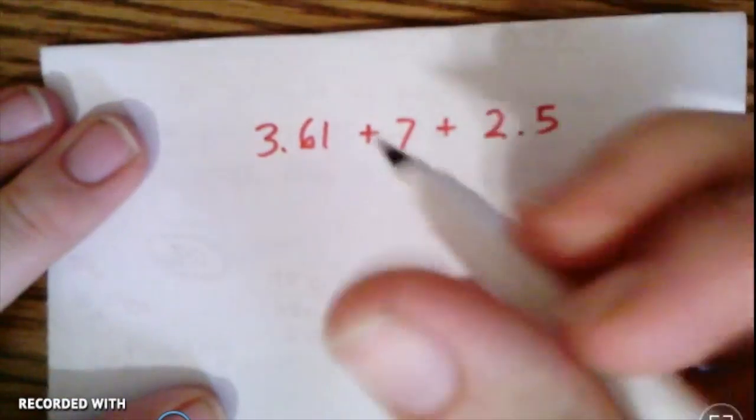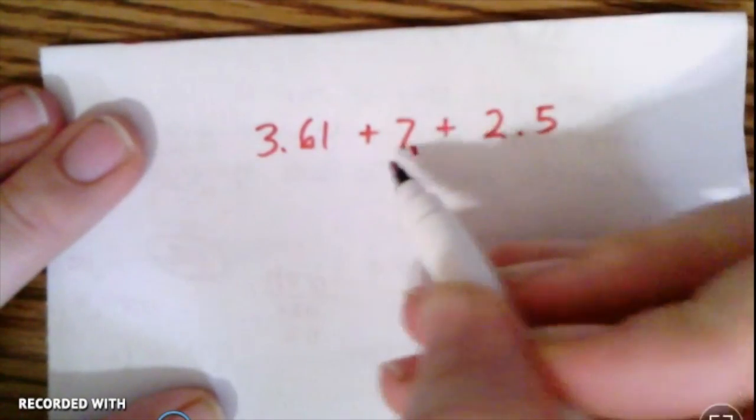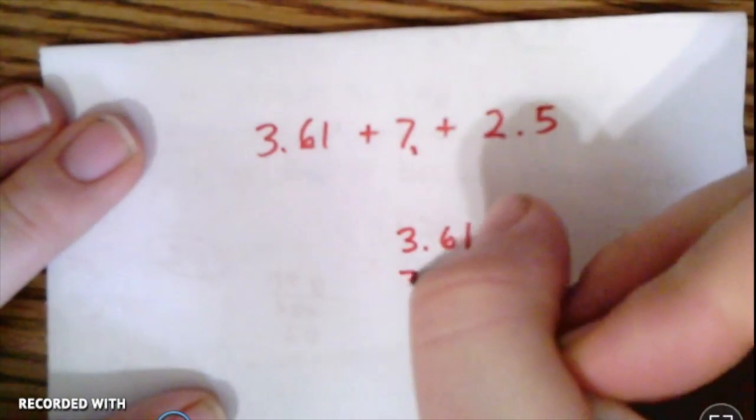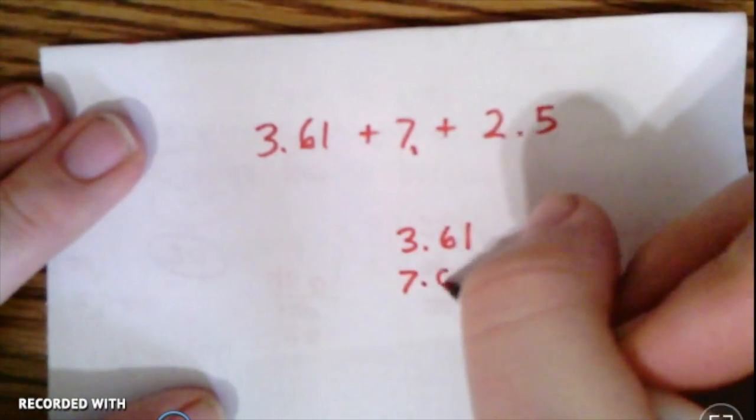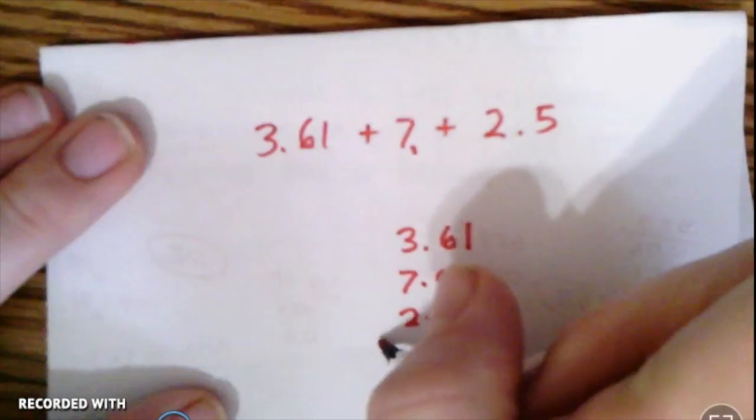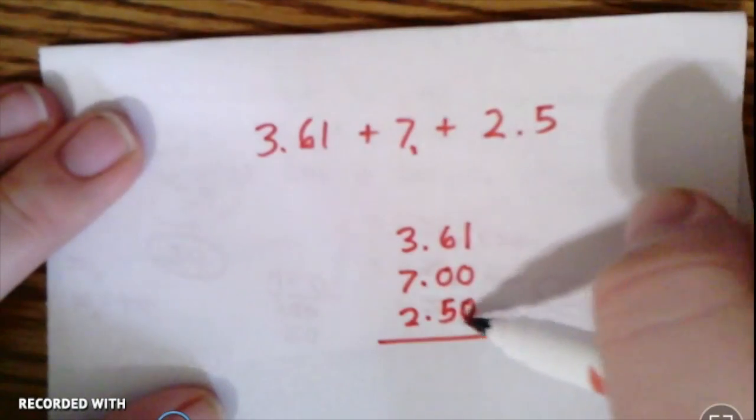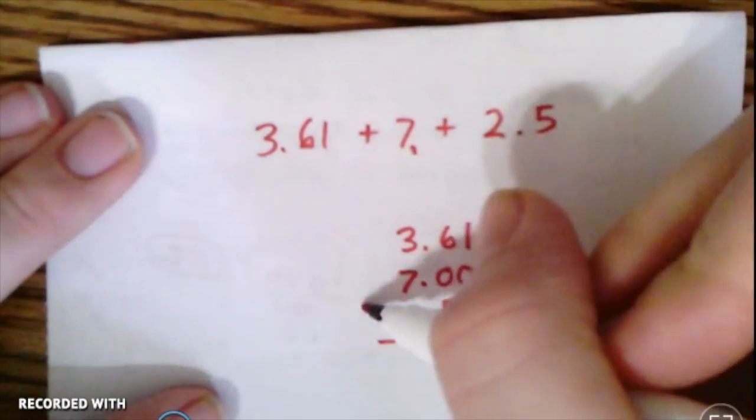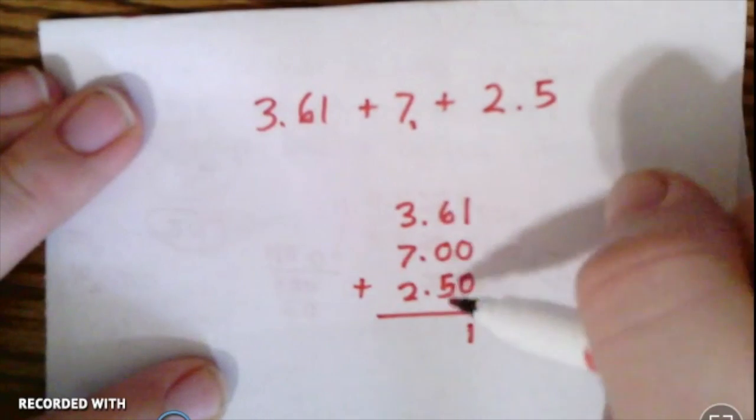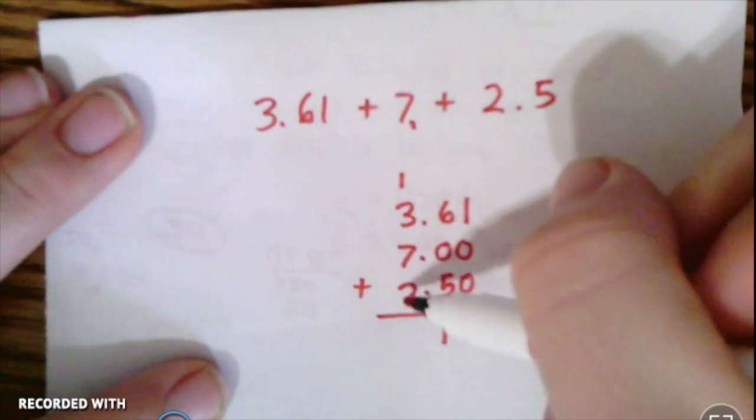I am going to pin my decimal after the 7, and then I'm going to line them up. All the decimals: 3.61, 7.00, and 2.5—add a zero there just to give them all the same amount of place values. And then for this one we're adding, so in this column I've got 1, 6 plus 5 is 11, 7 plus 3 is 10, 11, 12, 13.